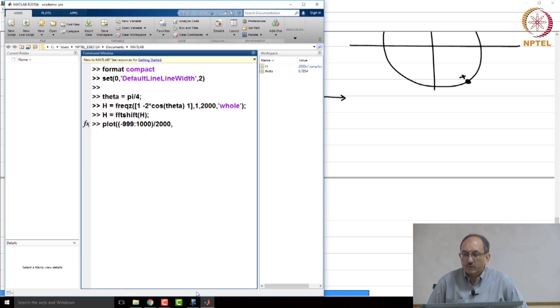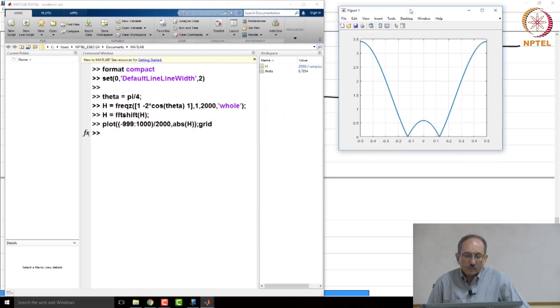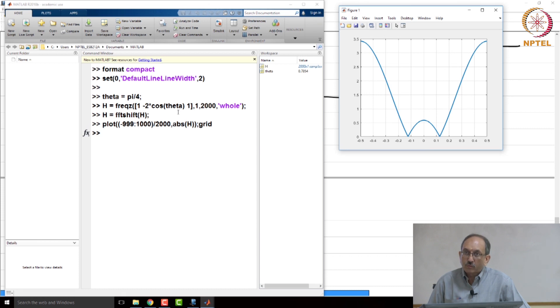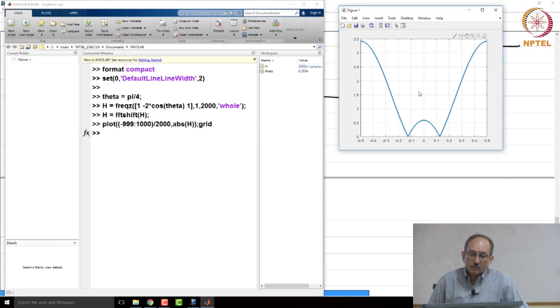And now, let us plot the frequency response. So, this is between minus 999 to 1000. I have to divide by 2000. So, that now, the x axis is between minus half and plus half. I am normalizing instead of plotting between minus pi and pi, I am plotting it between minus half to plus half. And then, let me plot the absolute value of the frequency response. So, this is how the response looks like and theta is pi by 4. So, pi by 4 by 2 pi is 1 over 8, 1 over 8 is 0.125. So, the 0 occurs precisely at 0.125. So, this occurs exactly at 0.125. So, this is the simple notch filter.